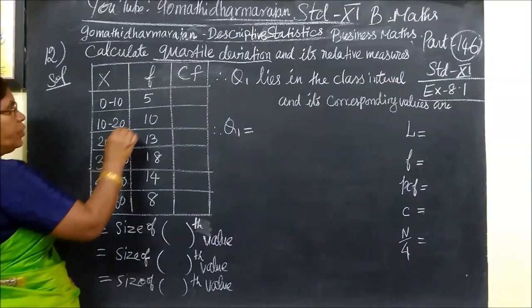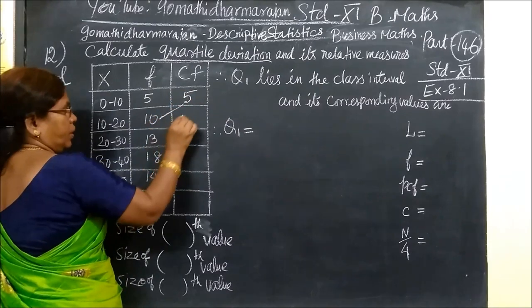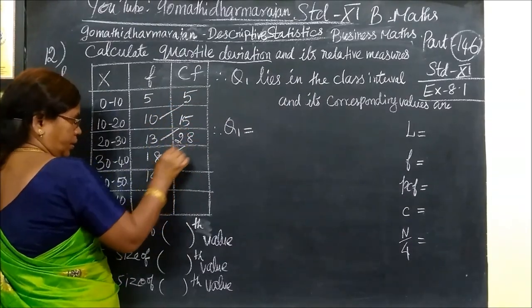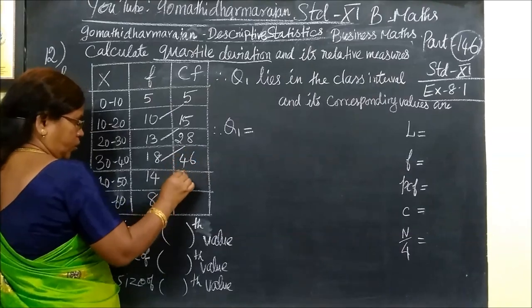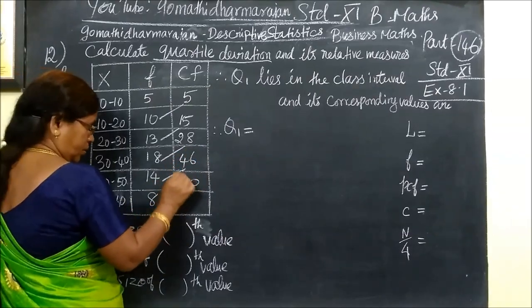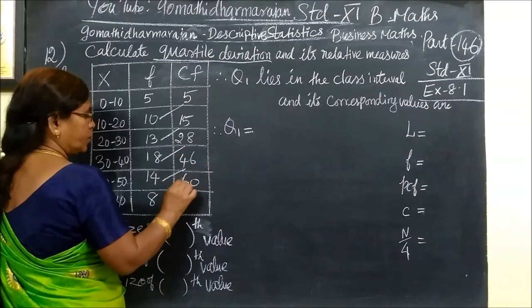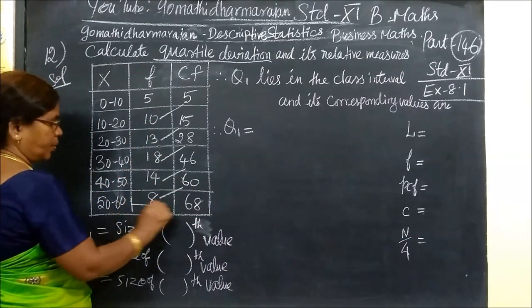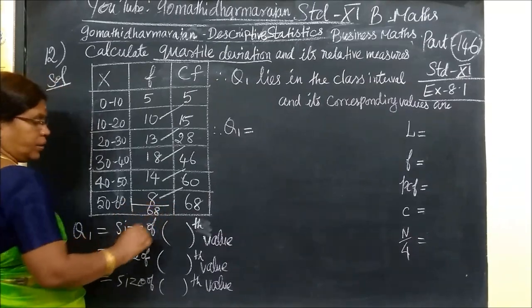The cumulative frequency groups are: 5, 8, 15, 28, 46, 60, and then 68. This is the complete distribution with total n equals 68.